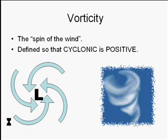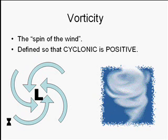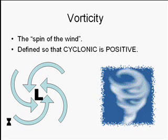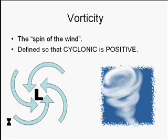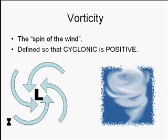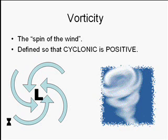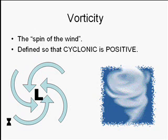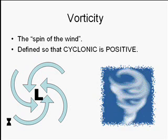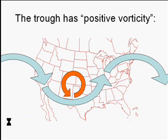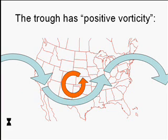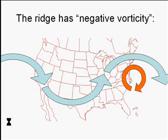An important vocabulary word in this lesson is vorticity. Loosely defined, we can say that vorticity is the spin of the wind. Vorticity is actually an equation — you can define a mathematical vorticity, it's actually a number, and you can make a map of vorticity. Vorticity is defined in such a way so that cyclonic spin is positive. So any kind of flow that is rotating in a counterclockwise way will have positive vorticity, and any flow rotating in a clockwise way will have negative vorticity. For example, in the base of a trough where air is turning in a counterclockwise manner, we would say that the trough has positive vorticity. In contrast, in a ridge where the flow turns in a clockwise manner, we would describe the winds as having negative vorticity.